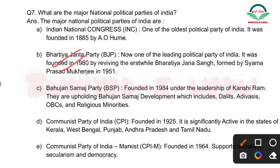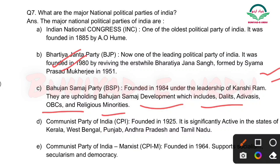Next: Bahujan Samaj Party (BSP) — founded in 1984 under the leadership of Kanshi Ram. Most important question — 1984 mein Kanshi Ram ne Bahujan Samaj Party ko found kiya tha. They uphold Bahujan Samaj development which includes Dalits, Adivasis, OBCs, and religious minorities — yeh BSP inke liye kaam karti hai.